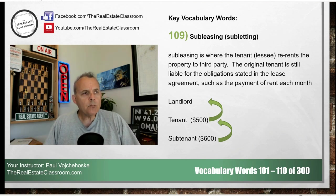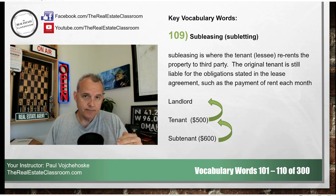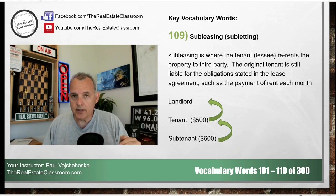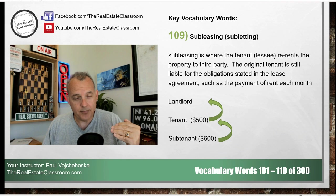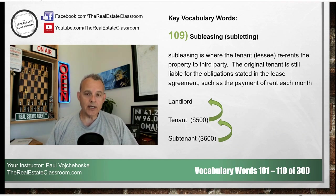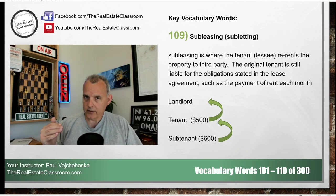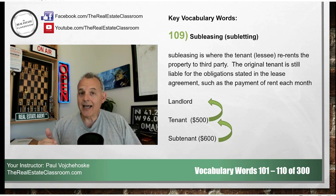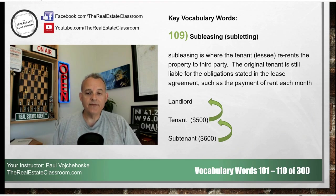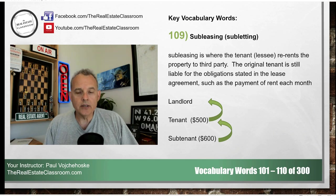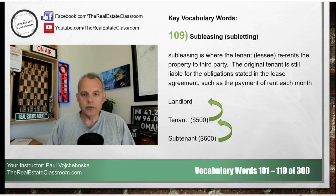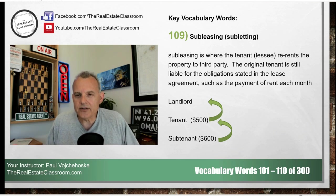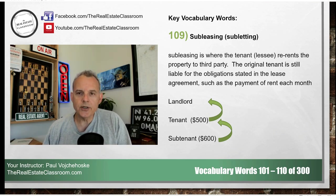If the tenant fails to pay the landlord the $500 monthly rent and the landlord must evict the tenant, the landlord will also have to evict the subtenant — even if the subtenant is paid up on their $600 monthly rent. However, if the subtenant fails to pay rent, it's the original tenant — not the landlord — who has to evict them. The landlord would have no standing in that eviction suit.